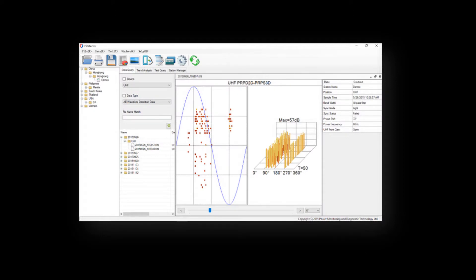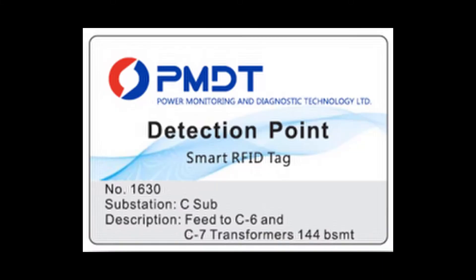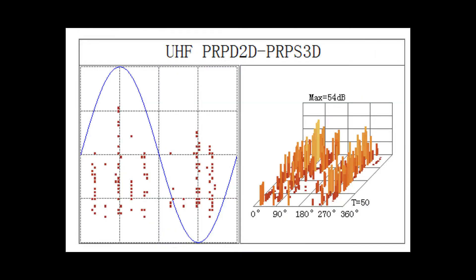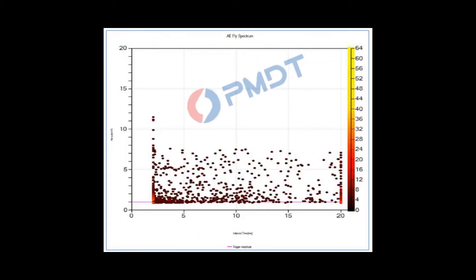The P-Detector features a PC-based data management software with automatic reporting, wireless sensor connection to the UHF and HFCT sensors, power and light frequency sync functions, onboard storage, and RFID asset tagging. Multiple detection modes and data spectrums such as PRPD, PRPS, signal cycle, phase, waveform, and amplitude are used to determine the PD type.